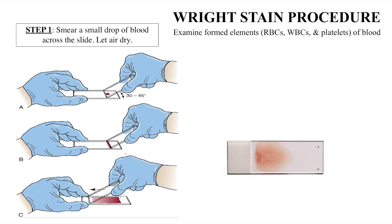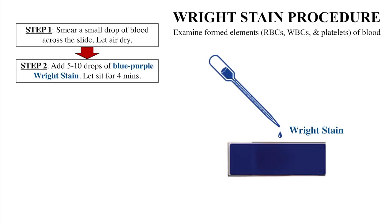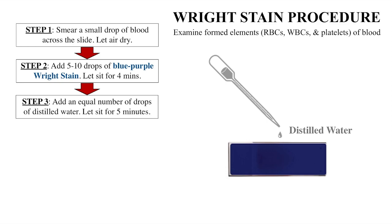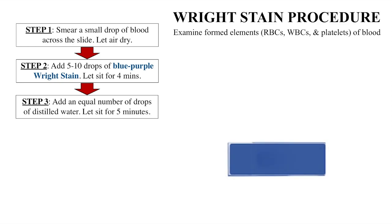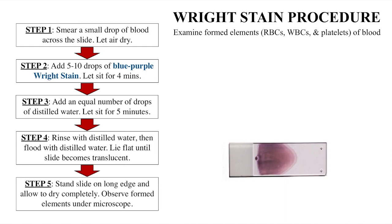The Wright stain procedure allows us to examine the red blood cells, white blood cells, and platelets that make up blood. First, create a blood smear by dragging a drop of blood across your slide and letting it dry completely. We'll demonstrate this technique in lab. After your blood smear dries completely, cover it with 5 to 10 drops of Wright stain. Let the stain sit for 4 minutes before adding an equal amount of distilled water. Let the Wright stain and distilled water mixture sit for an additional 5 minutes. Rinse your slide, and then flood it again with distilled water. Stand the slide on its long edge and allow it to dry completely before viewing your blood smear under the microscope.